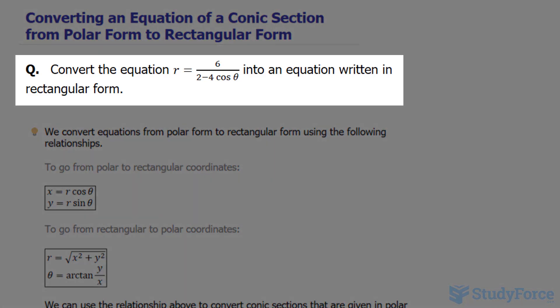The question reads, convert the equation r is equal to 6 over 2 minus 4 cosine theta into an equation written in rectangular form.